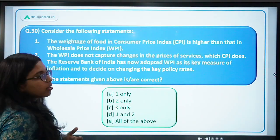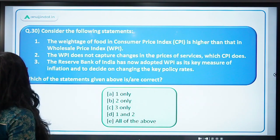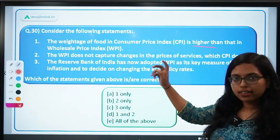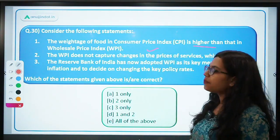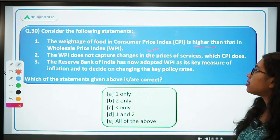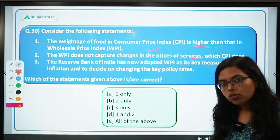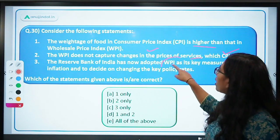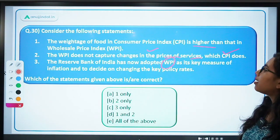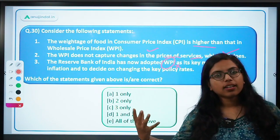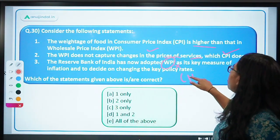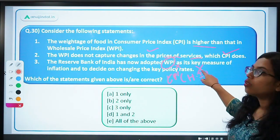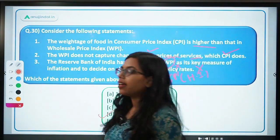Consider the following statements: Statement 1 — the weightage of food in CPI is higher than in WPI — very obviously correct. Statement 2 — WPI does not capture changes in the prices of services — correct, services are not captured in WPI. Statement 3 — RBI has now adopted WPI as the key measure of inflation to decide key policy rates — WRONG. Previously WPI was used, this is called headline inflation. Today the headline inflation measure is CPI. So correct statements are 1 and 2 — option D is the correct answer.